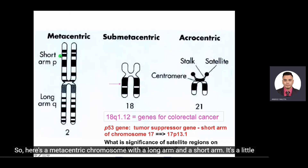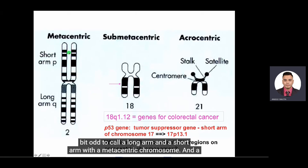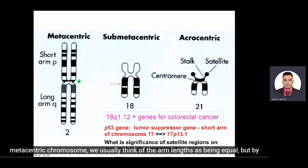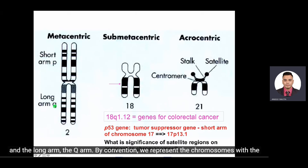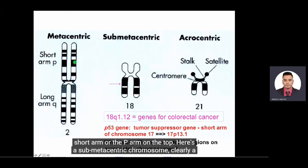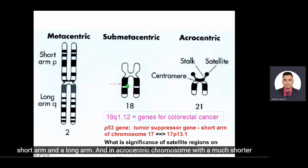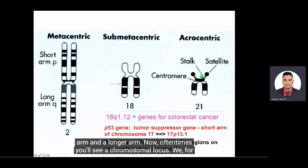Here's a metacentric chromosome. It's a little odd to refer to a long arm and a short arm with a metacentric chromosome since we usually think of the arm lengths as equal, but by tradition one talks about a short arm — the p arm, so-called petite arm — and the long arm, the q arm. By convention, we represent the chromosomes with the short arm or p arm on top. Here's a sub-metacentric chromosome with a clearly shorter arm and longer arm, and an acrocentric chromosome with a much shorter arm and longer arm.